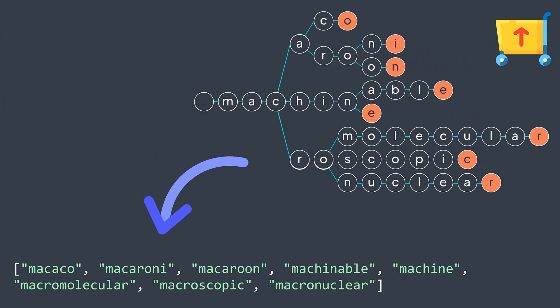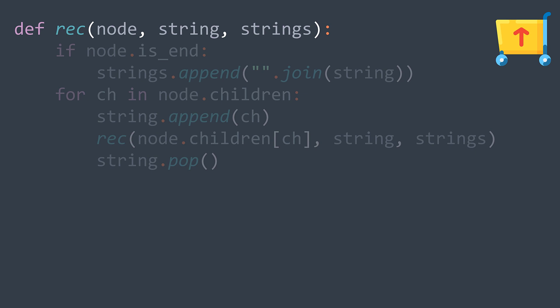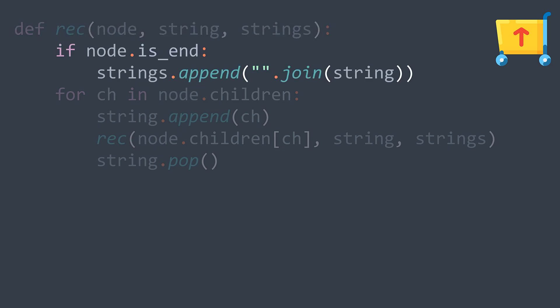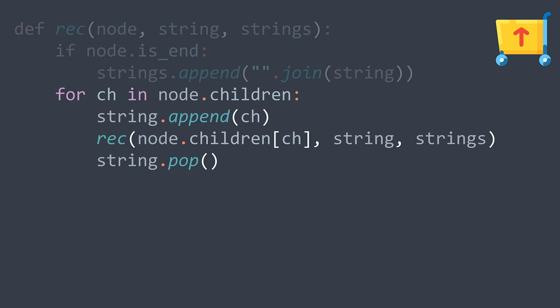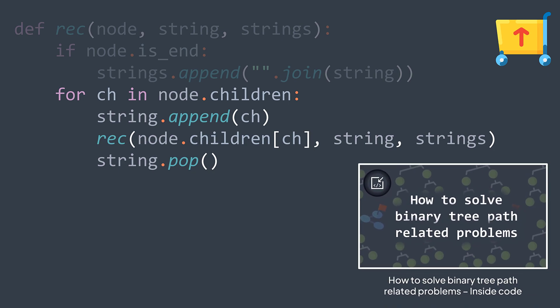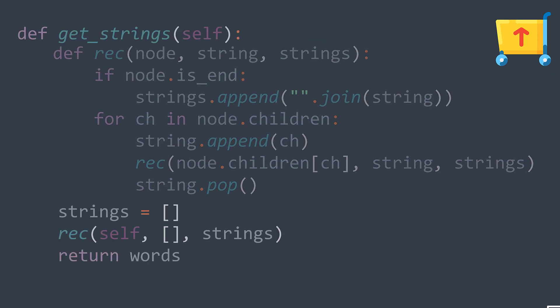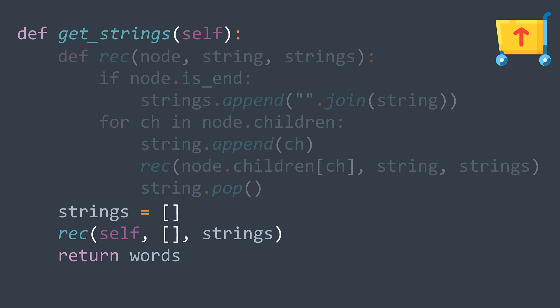The last operation is retrieving all the strings of a trie, which will be useful for the autocomplete feature. This is equivalent to finding all root-to-end-of-string node paths, since each represents a string. We traverse the trie depth-first, adding the current string to the array every time we find an isEnd node. The recursive function takes three parameters: the actual node, the string we're building, and the array of strings. If the node is isEnd, we join the characters and append to the array. For each child character, we append it to the string, call the recursive function, then remove it after — the technique from path-related tree problems. The non-recursive function creates the array, calls the recursive function to fill it, and returns it.